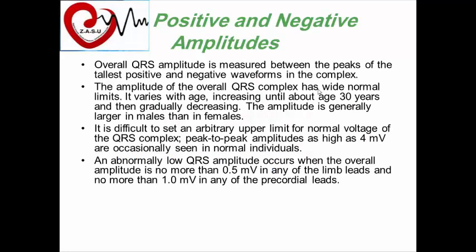Regarding positive and negative amplitude of the QRS complex: the overall amplitude is measured between the peaks of the tallest positive and negative waveforms. The amplitude has wide normal limits, varies with age, increasing until about age 30 and then gradually decreasing, and is generally larger in males than females. An abnormally low voltage QRS occurs when the overall amplitude is no more than 0.5 millivolts in any limb lead and no more than 1 millivolt in any precordial lead.